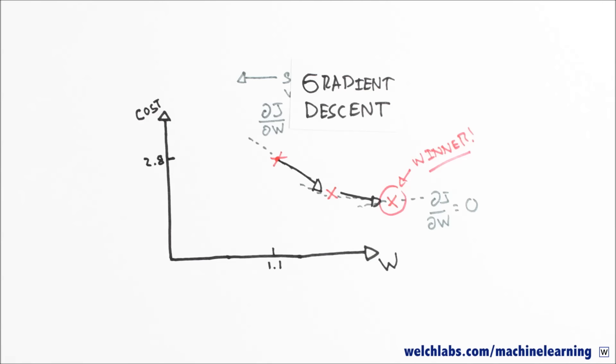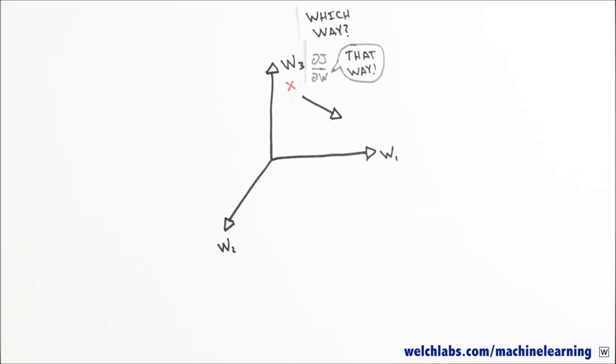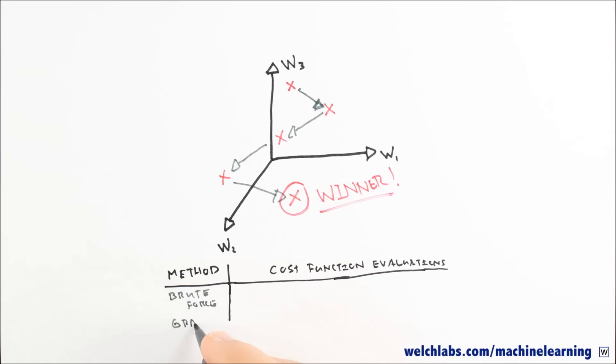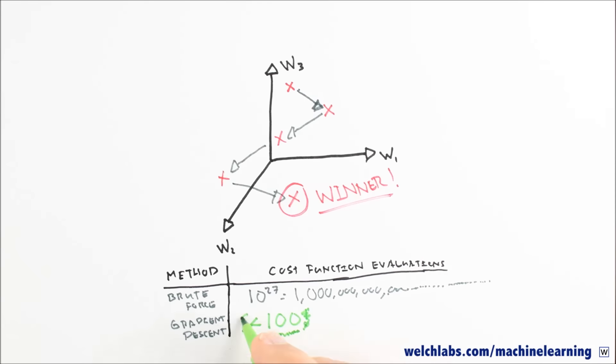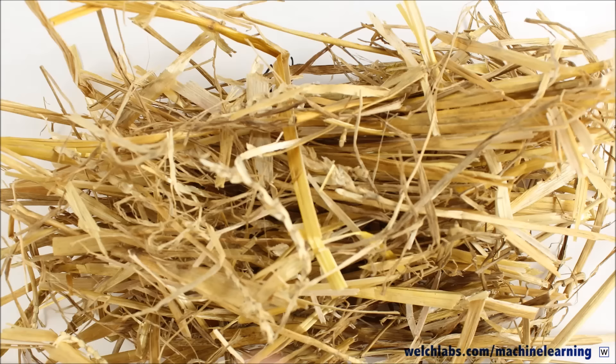And although it may not seem so impressive in one dimension, it is capable of incredible speed ups in higher dimensions. In fact, in our final video, we'll show that what would have taken 10 to the 27th function evaluations with our brute force method will take less than 100 evaluations with gradient descent. Gradient descent allows us to find needles in very, very, very large haystacks.